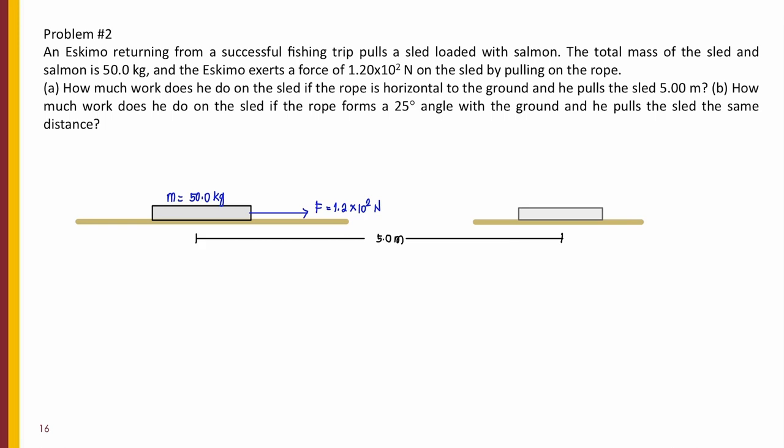So, how much work does he do on the sled? Because the force exerted is just parallel to the direction of the displacement of the sled, and since the problem isn't talking about any opposition force or friction, the mass here of the sled will not affect the work done. Because the net force is just the force exerted by the Eskimo. So, for letter A,